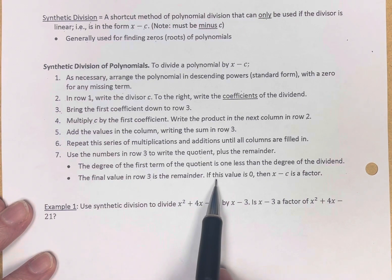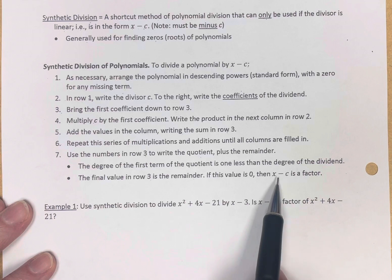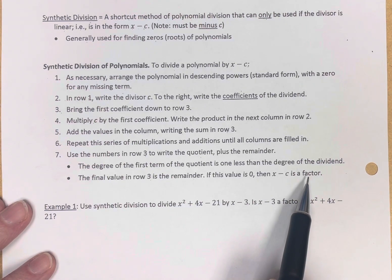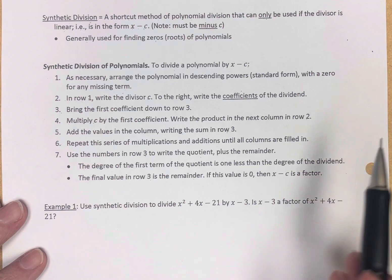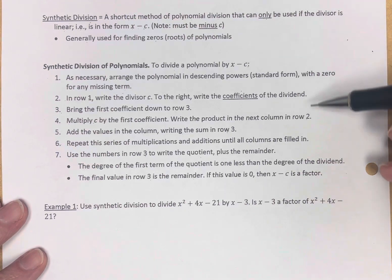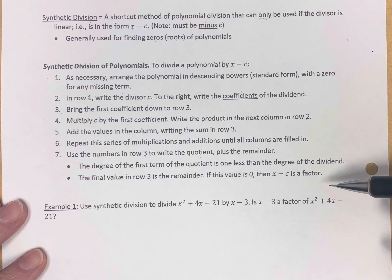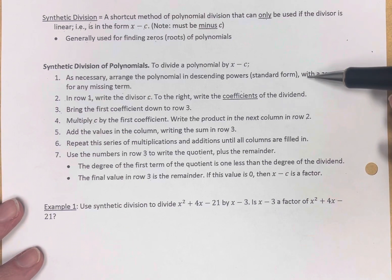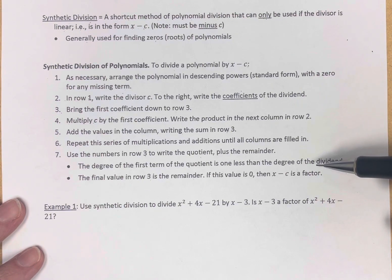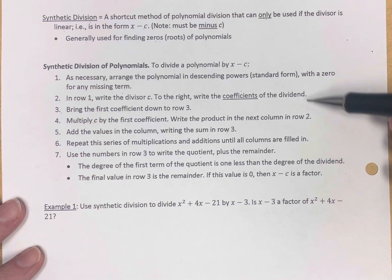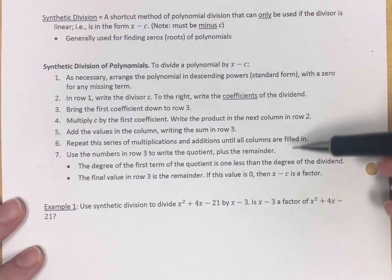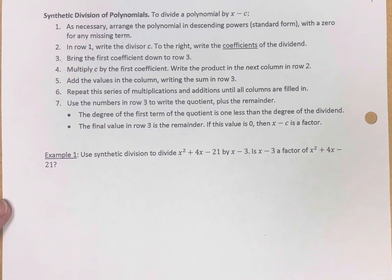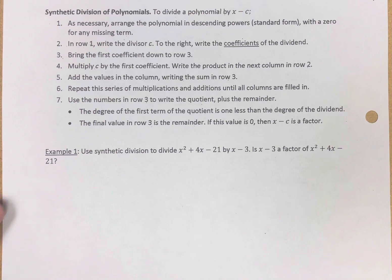If that final value is zero, then x minus c is a factor of the polynomial. I know it sounds like a lot — certainly confusing. I know it was for me when I first did this. Let's do a couple of examples and we'll return to this as we work with it.